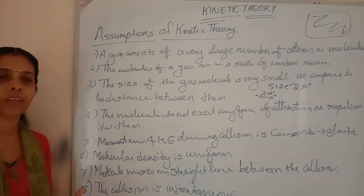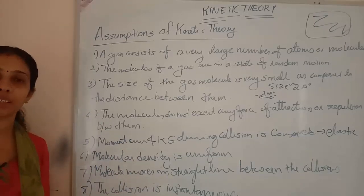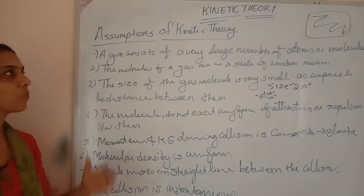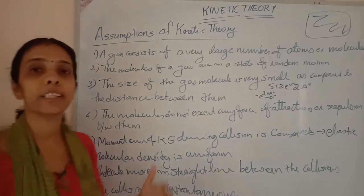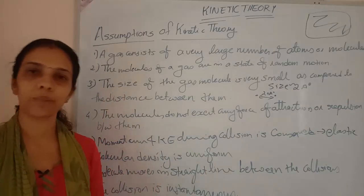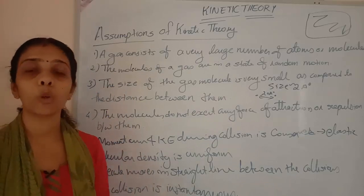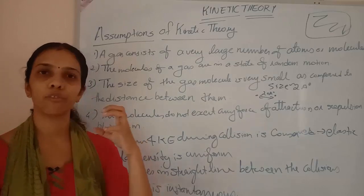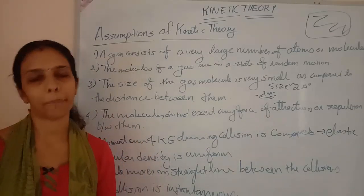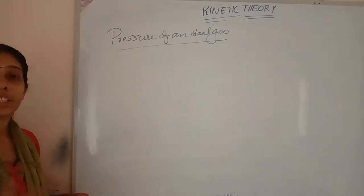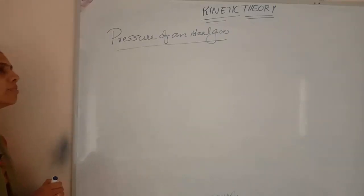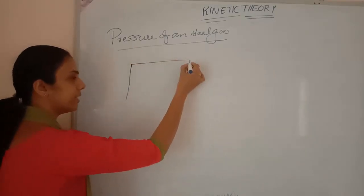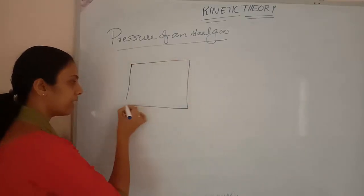Those are the major assumptions of kinetic theory of gases, which you've likely already covered in chemistry. Now we are going to study the pressure of an ideal gas — we will derive a formula for pressure. To do this, we first consider a cube with side length l, in which gas is enclosed.